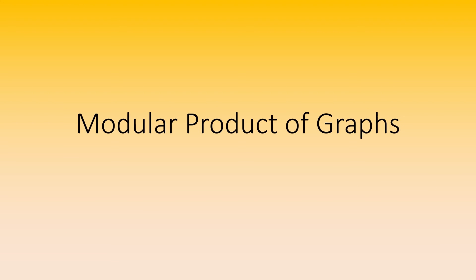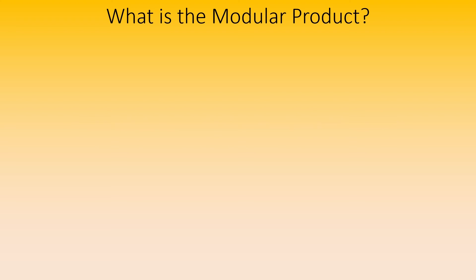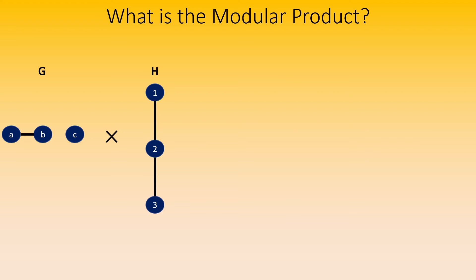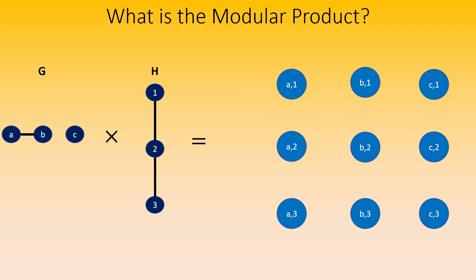Hello VitalSign, today we're going to talk about the modular product of graphs. The modular product of graphs is a binary graph operation. It takes as its input two undirected graphs G and H and outputs an undirected graph known as the modular product of G and H, whose vertex set is the Cartesian product of the vertex sets of the input graphs, and whose vertices are connected according to two adjacency rules.